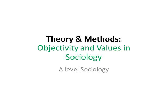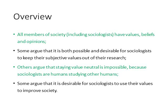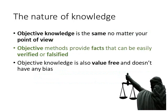Hello and welcome to this video on objectivity and values in sociology. All members of society, including sociologists, have values, beliefs and opinions — things we hold to be important, things we hold to be true, and our views on the world. Some argue it is both possible and desirable for sociologists to keep their subjective values out of their research. Others argue that staying value-neutral is impossible, because sociologists are humans studying other humans and will inevitably have opinions that intrude on their research. Some argue it is even desirable for sociologists to use their values to improve society, acting as a catalyst.